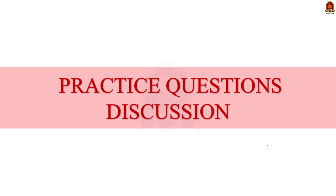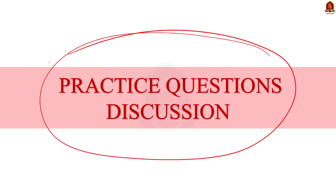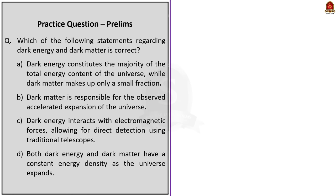That is all about the news discussion. Let us move on to the preliminary practice questions. Today we have four questions. Question 1: Which of the following statements regarding dark energy and dark matter is correct? From our discussion, dark energy constitutes the majority of total energy whereas dark matter constitutes only a small fraction of the total content of the universe. Statement one is correct, so we need not check the other three options. The correct option is option A.